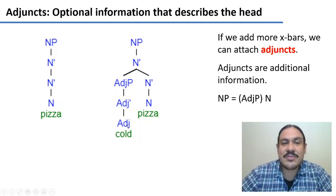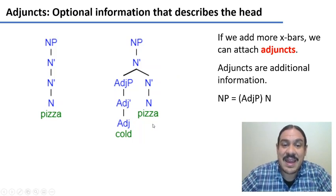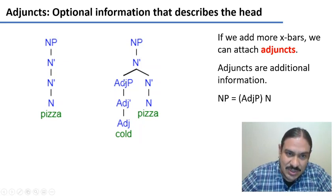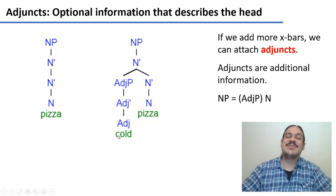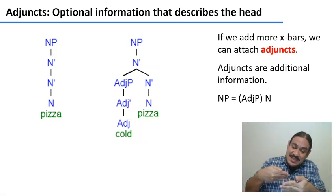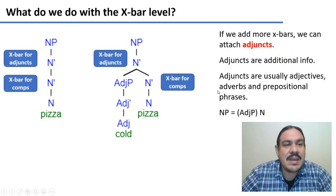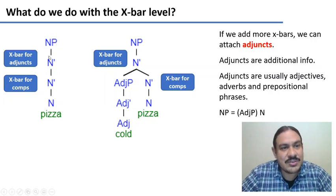So this would be the structure for the phrase 'cold pizza' — with a head, a phrase, the head of the phrase, and then an adjunct, which is in itself a phrase with its own head. As you can see, this is recursive — it's one phrase inside of another phrase. Again, we have the basic X-bar structure: we reserve one X-bar for adjuncts and one for complements.